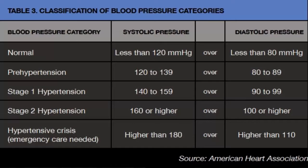The criteria for a diagnosis of hypertension varies slightly from country to country, even from reference to reference. The table shown here reflects the typical criteria used in the United States: a blood pressure less than 120 over 80 is associated with lower risk; prehypertension is 120–139 over 80–89; stage one hypertension is 140–159 over 90; stage two hypertension is 160 or higher over 100; and a hypertensive crisis is higher than 180 over 110.